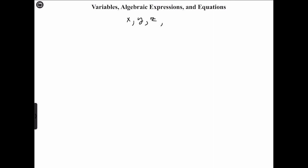Any letter from the alphabet can be used as a variable, such as a, b, c, or it could be capital A, capital B, or capital C. Remember that a variable is used to represent an unknown quantity, and we'll see that in expressions.